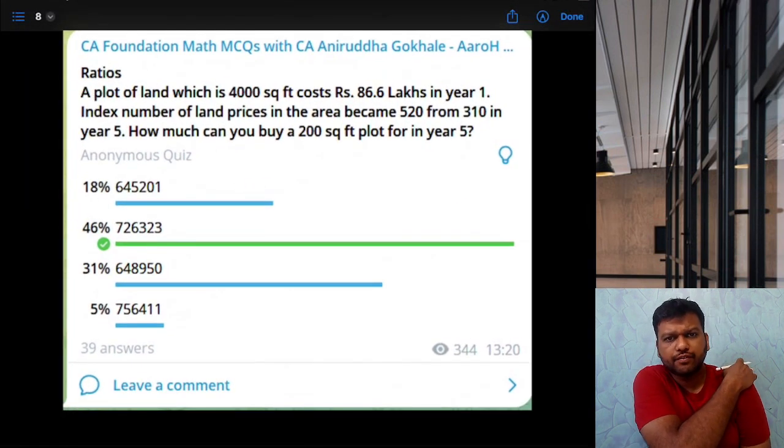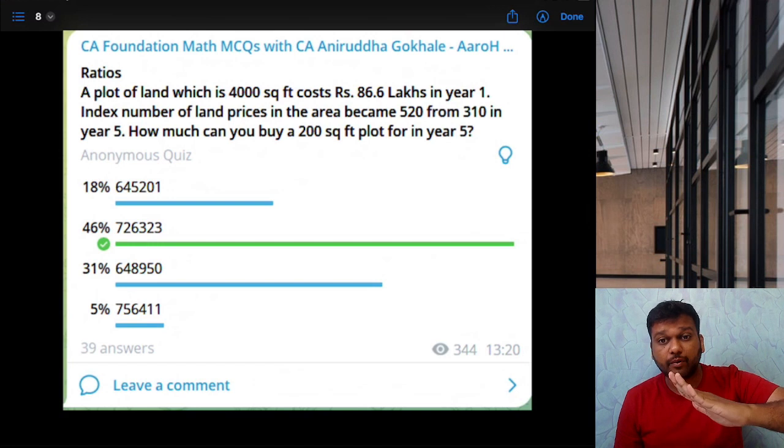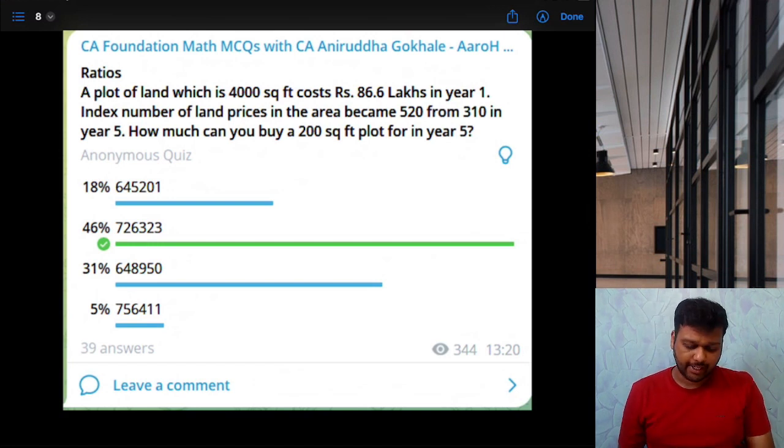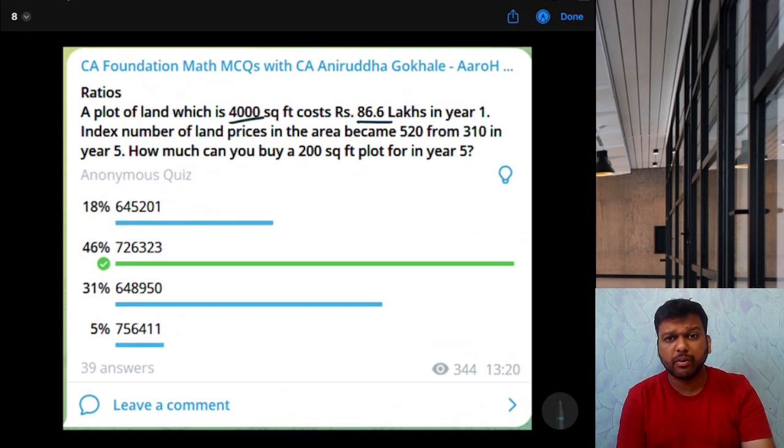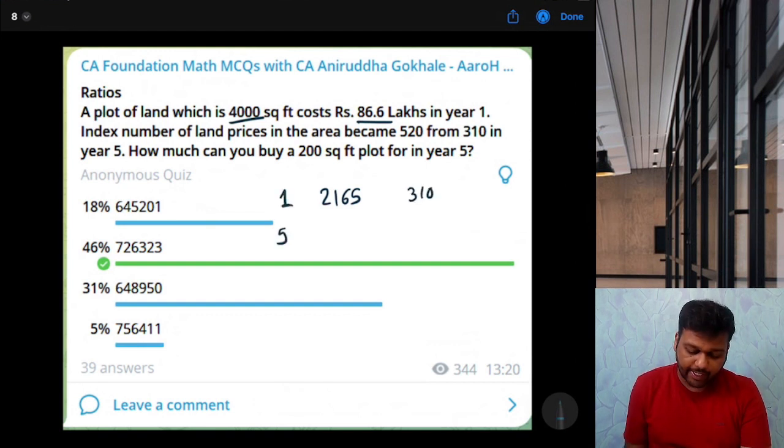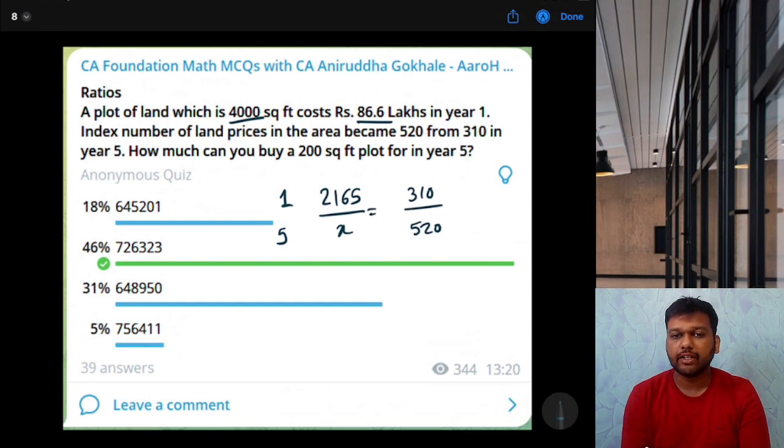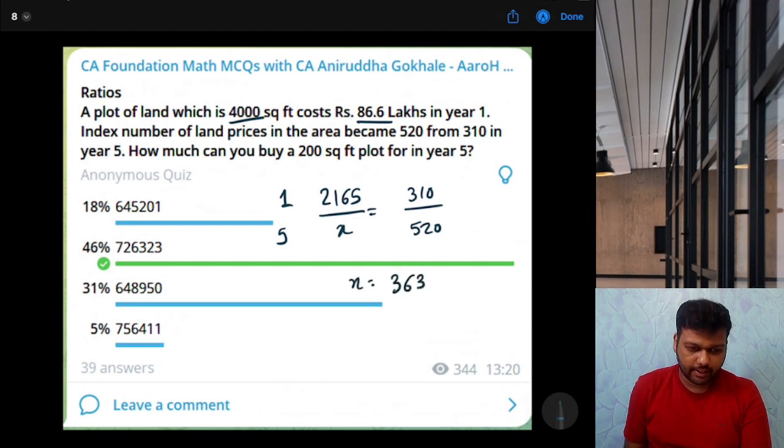Next. A plot of land which is 4000 square feet costs 86.6 lakhs in year 1. Index number of land prices in the area became 520 from 310 in year 5. 86.6 lakhs for 4000 square feet. So how much is the cost per square feet? 86,60,000 divided by 4000 which is 2165 per square feet. This is in year 1. In year 5, index has become from 310 to 520. So we can just cross multiply. This divided by X is equal to 310 divided by 520. So 2165 divided by 310 into 520. That gives us 3631.61. They are asking for 200 square feet plot in year 5. So into 200. That will give us 726,322. Option B is the correct answer.